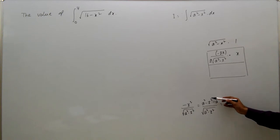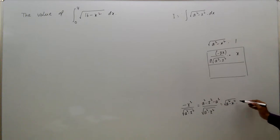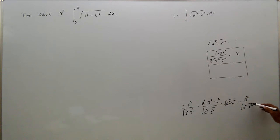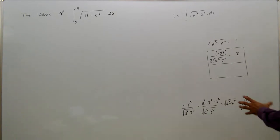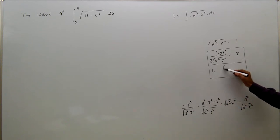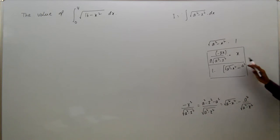That equals a squared minus x squared minus a squared by root of a squared minus x squared. This can be written as: one times square root of a squared minus x squared, minus a squared by root of a squared minus x squared.